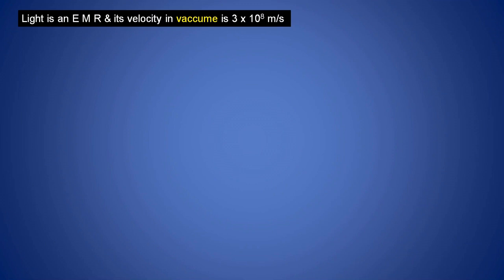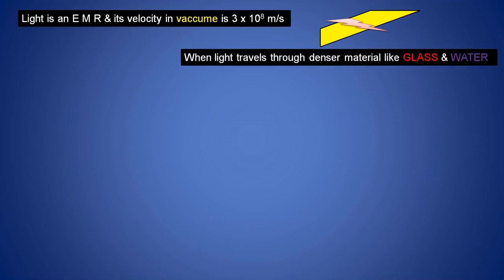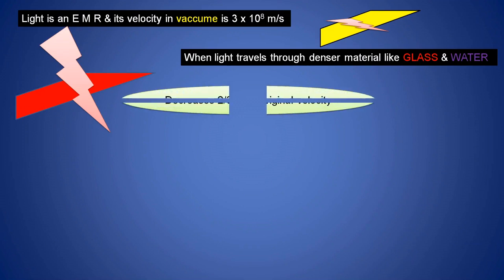What is vacuum? Vacuum is the place where no material is present. The yellow color represents vacuum and the red color represents light. In vacuum, the velocity of light is 3 × 10⁸ meters per second. When light travels through denser material like glass, light decreases its velocity to 2/3 of its original velocity.